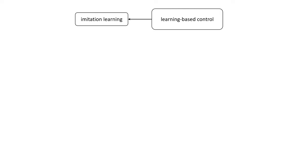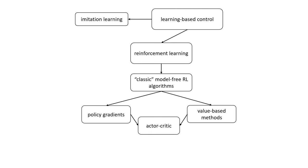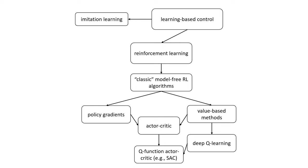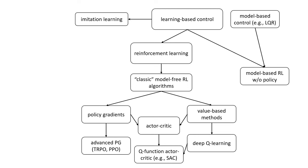Learning-based control methods include imitation learning methods, which are learning from demonstration supervision, and reinforcement learning methods, which are learning from rewards. Reinforcement learning methods include classic model-free RL algorithms like policy gradients and value-based methods. Value-based methods and policy gradients combined result in actor-critic methods. We covered deep Q-learning as an example of a specific value-based method, Q-function actor-critic methods like SAC, and advanced policy gradient methods like TRPO and PPO. There's also model-based control, which does not have to be learning-based.